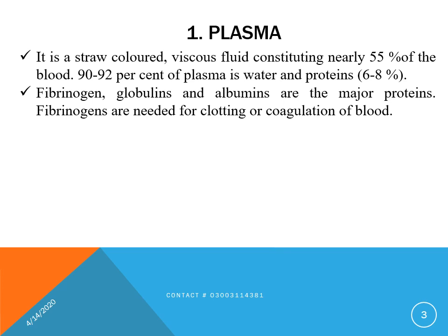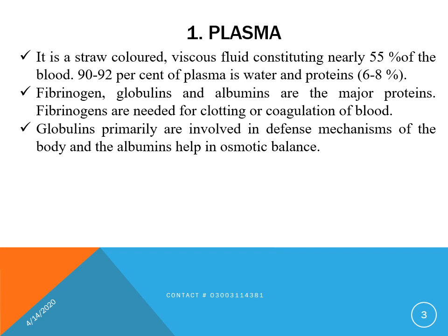Fibrinogen, globulin, and albumin are the special proteins of plasma. Fibrinogen is needed for clotting or coagulation of blood — it is responsible for the stoppage of blood from the injured part, along with platelets. Globulin is primarily involved in the defense system, meaning the immune system. Albumin helps in the osmolatory balance, meaning maintenance of solute and solvent inside the body.